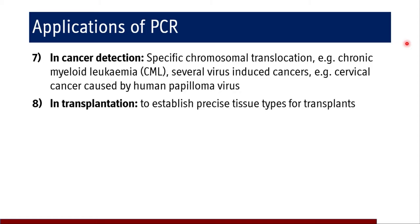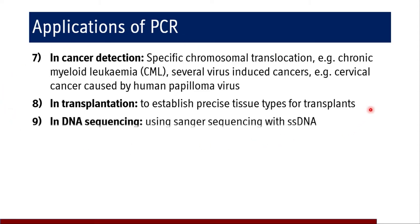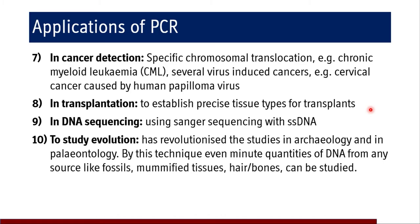In transplantation also, to establish the precise tissue type of a transplant, we use PCR. In DNA sequencing by Sanger's technique with the help of single-stranded DNA, we use PCR. To study evolution, PCR is used and has revolutionized studies in archaeology and palaeontology. By this technique, even minor quantities of DNA from sources like fossils, mummified tissues, hair, or bones can be studied by amplification of the existing DNA.